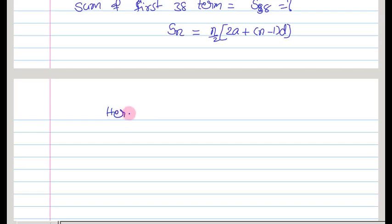Here n is equal to 38 and a they mention as 17. Now d is equal to 9. Let us substitute these all values. So s38 is equal to 38 by 2 into 2 into 17 plus 38 minus 1 into 9.